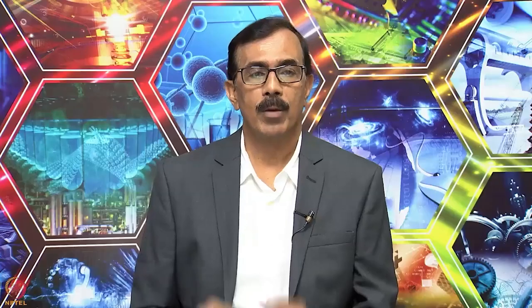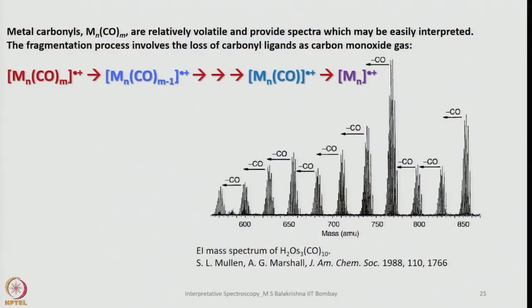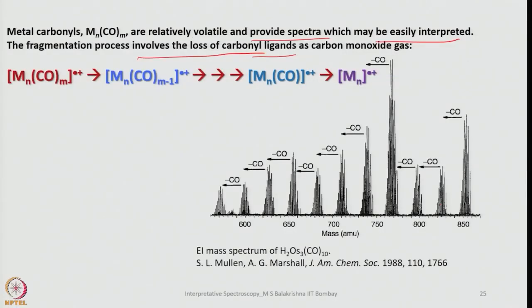Let us look into metal carbonyls. We come across a large number of metal carbonyls in simple mononuclear to polynuclear clusters and cages. Here we look into how to extract information from mass spectra of metal carbonyls. Metal carbonyls are relatively more volatile and provide spectra which may be easily interpreted. The fragmentation process involves the loss of carbonyl ligands in the form of carbon monoxide gas. You can clearly distinguish from the parent peak through bunches of peaks with gradation of CO, about 28 mass units loss.